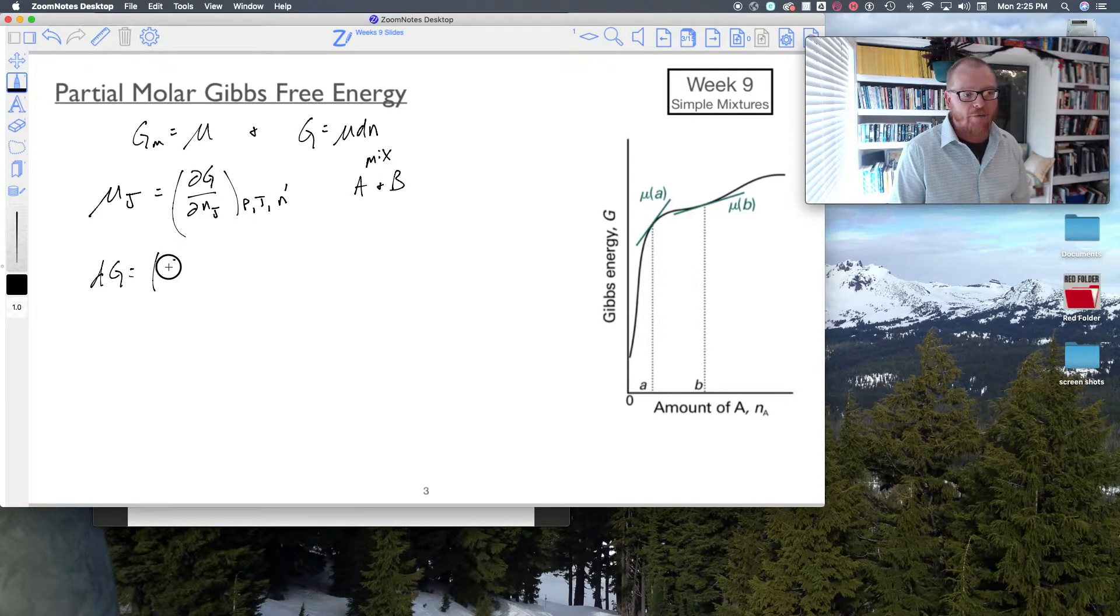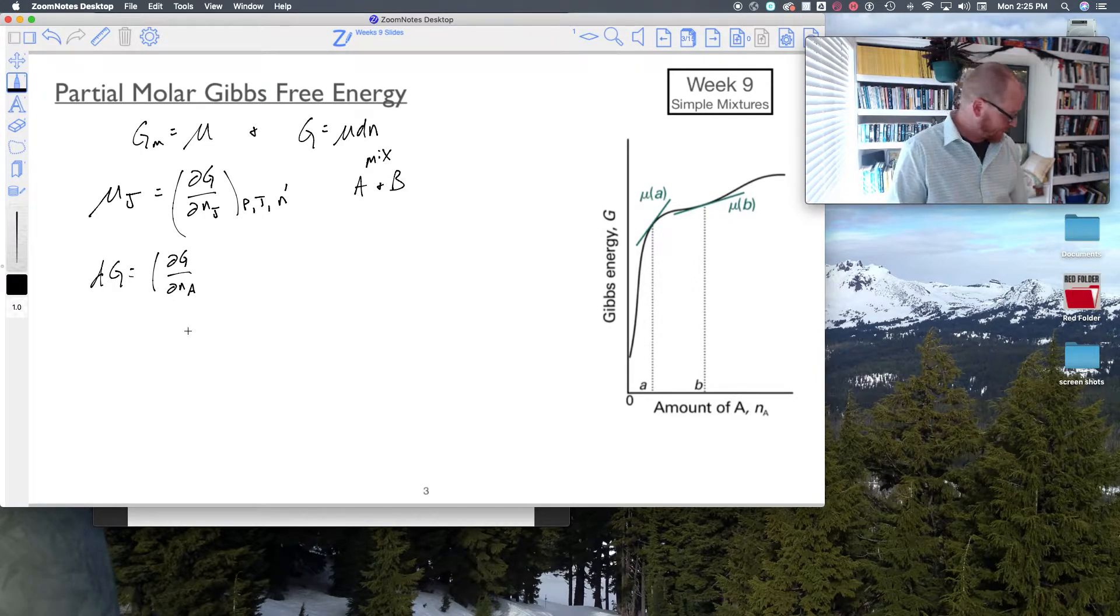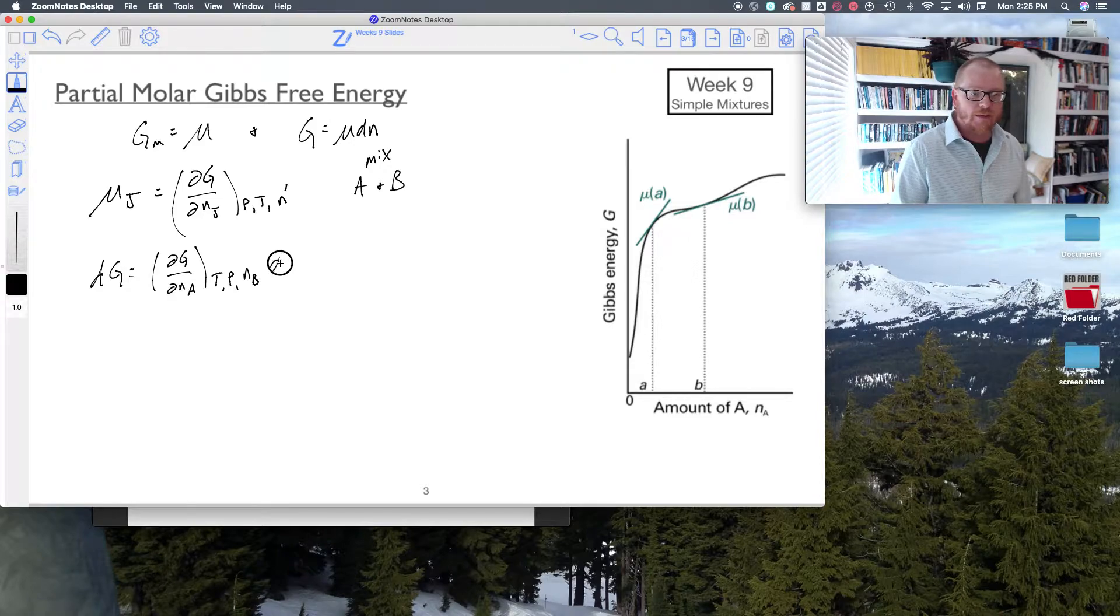So then I'm going to have now the partial free energy of A, which is the chemical potential of A, at constant T, constant P, and constant N_B, and then times dN_A.